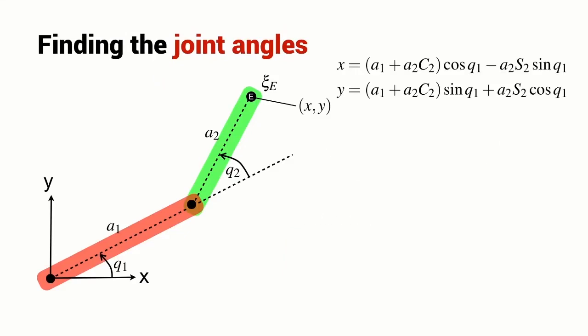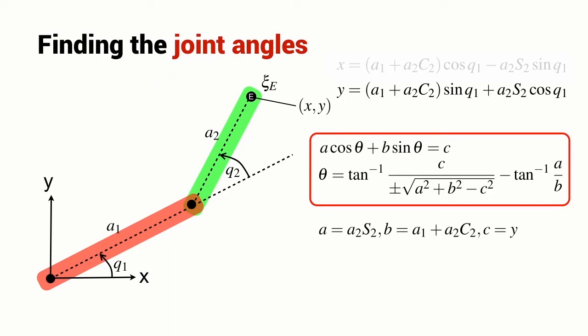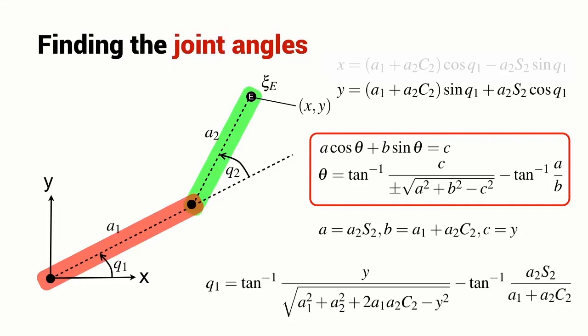So I'm going to consider just one of the equations, the equation for Y. Using our well-known identity and its solution, I can determine the values for the variables little a, little b, and little c. And once I've determined those, then I can just write down the solution for Q1 which is the equivalent of theta in this particular case.